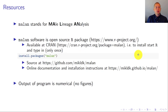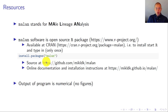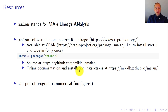Malan stands for Male Linear Lineage Analysis. It's open source and developed as an R package, meaning you need the R statistical software first, and then you can install the Malan package using install.packages('malan'). The entire source code is available on GitHub, and you're welcome to download and modify it. There's also online documentation and installation instructions available.